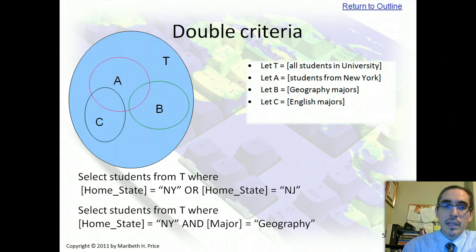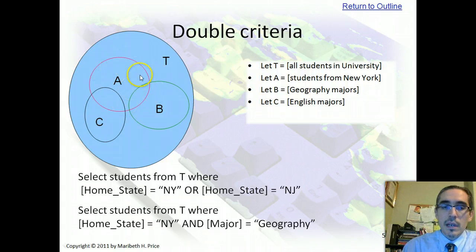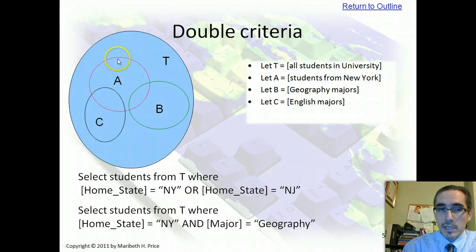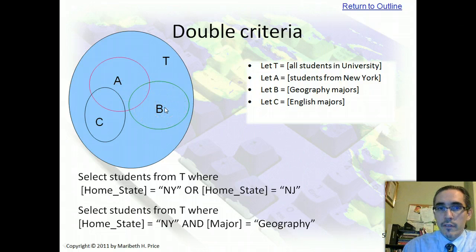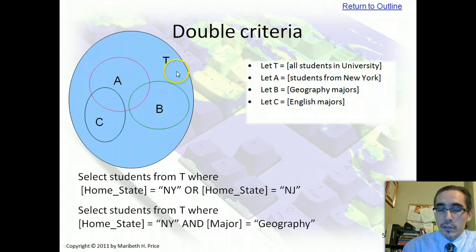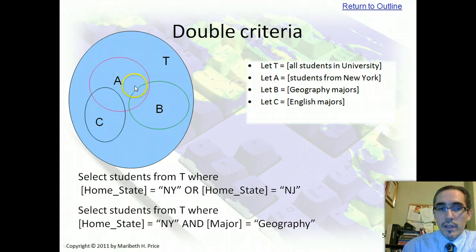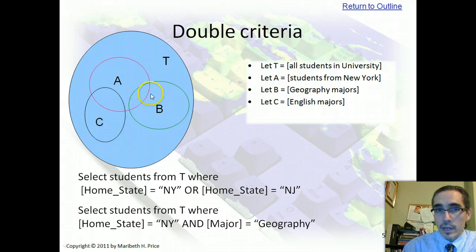The A circle represents all students who are from New York, from the state of New York. All the students from New York are in the university, but not all students at the university are from New York, because this circle is smaller. The B circle represents geography majors — all geography majors are students at the university, but not all students are geography majors. There's a little bit of overlap between A and B, and that overlap represents students from New York who are also geography majors — there's an intersection there.